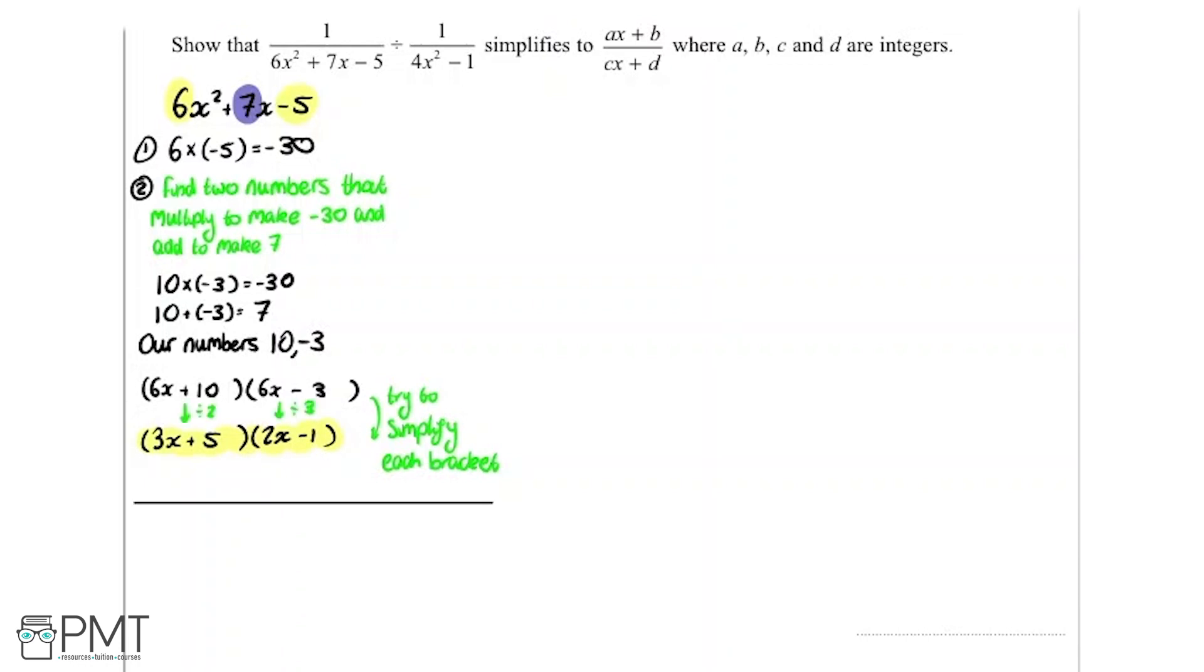So now I'm going to look at the other quadratic. So we've got 4x squared minus 1. Now this one's a bit different. This is a special form of quadratic called the difference of two squares. So basically what that means is you can do this. So if you've got something in the form a squared minus b squared,